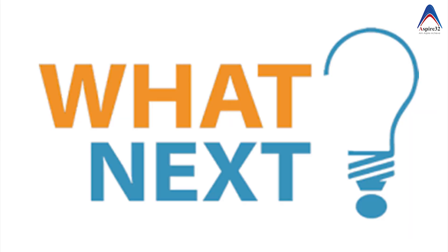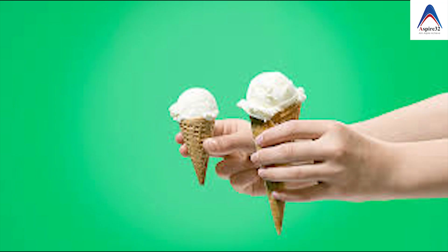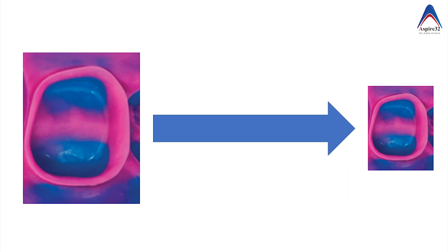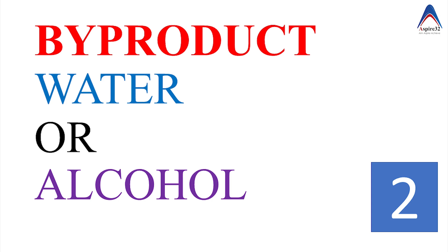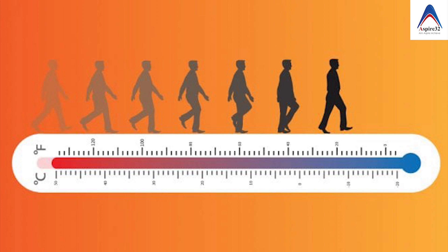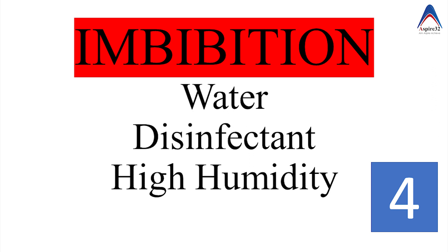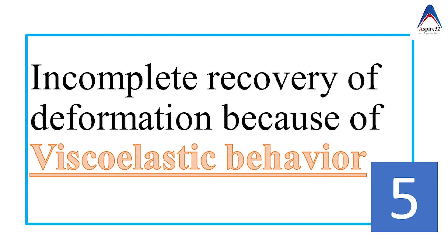The most important property is dimensional change. If you make an impression and pour it but the impression doesn't match the actual preparation, it means the dimensions have changed, leading to improper restorations. There are five reasons for dimensional change: first, polymerization shrinkage; second, byproducts like water in polysulphide and alcohol in condensation silicone; third, thermal contraction when removing the impression from oral to room temperature; fourth, imbibition — absorption of water, disinfectant, or high humidity, more commonly seen in addition silicone with surfactants; and fifth, incomplete recovery after removing the impression from the tooth.